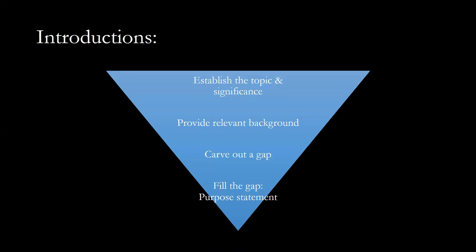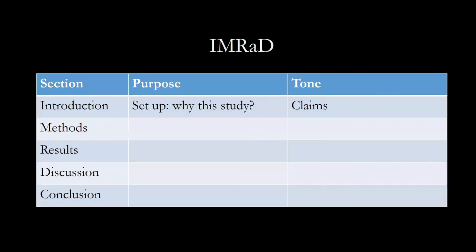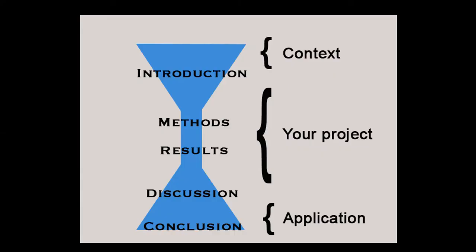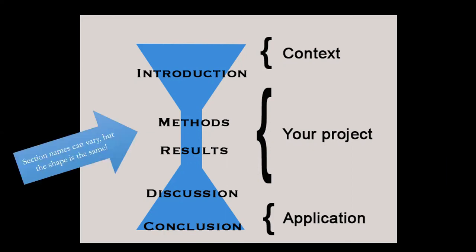To review: introductions establish the topic or problem, provide relevant background, carve out a gap, and then fill the gap. Your introduction will set up why your particular study or literature review is relevant or needed, and you will primarily use claims based on relevant literature. Your introduction acts as a funnel — an hourglass shape — taking you from a larger context to your individual project, and then broadening back out at the end of your paper to make applications or explain the relevancy of your work.